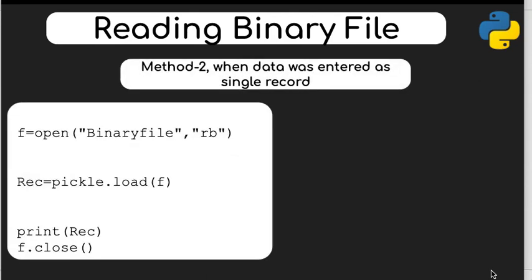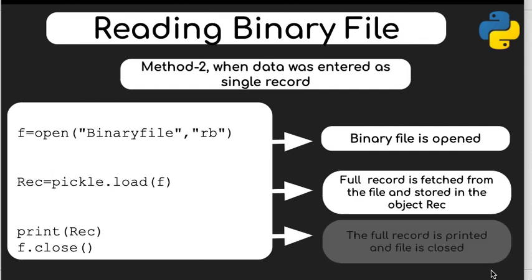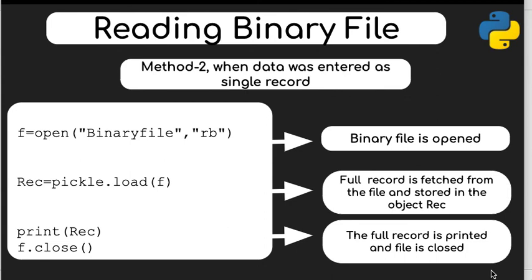For reading: in the first method, since data is stored as multiple records, you must use a try-except loop handling the EOFError — the file is opened, records are fetched one by one until the end of file exception is raised and the file closes. In the second method, since data is one record, you simply open, load, and print with no exception handling needed. I hope reading and writing binary files is clear — please write questions in the comments, and in the next video I'll cover searching and modifying records.